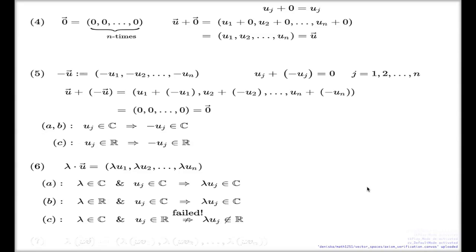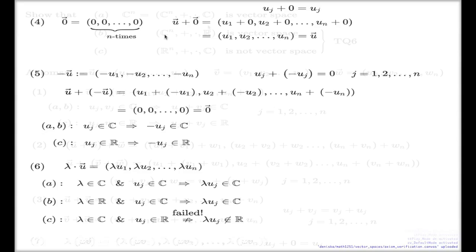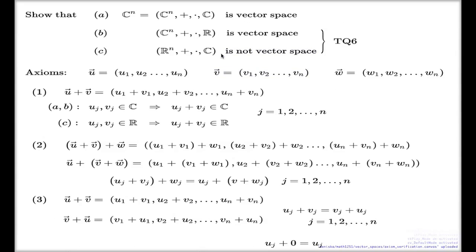So, if you remember, we needed to show that the example here. Let me scroll down. Any questions? It is exactly the reason that the sixth axiom failed. It is exactly the reason why this one is not a vector space.